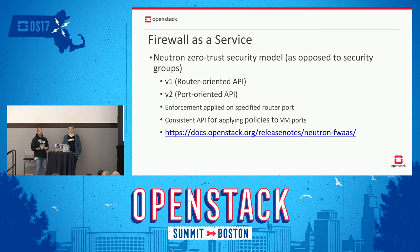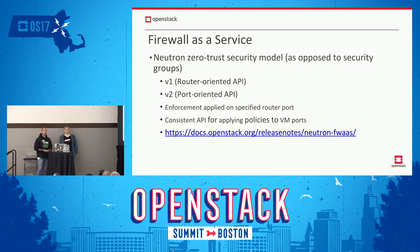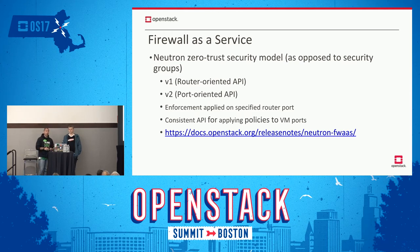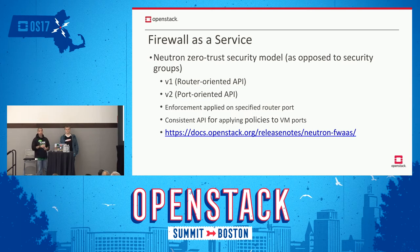Firewall as a service was conceived as a way to provide a zero trust security model, as opposed to security groups where the user opens ports. Firewall as a service takes the administrator and operator standpoint, saying: I want to close these ports — it's a mechanism to override user will. It started with an initial iteration looking at how rules could be applied at the router level, but evolved to be more port-oriented with a V2 version. The V2 version seems more promising in that it allows the semantics of firewall as a service to be more consistently applied throughout the port topology types available in Neutron.